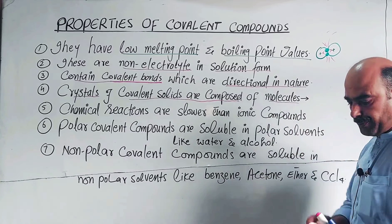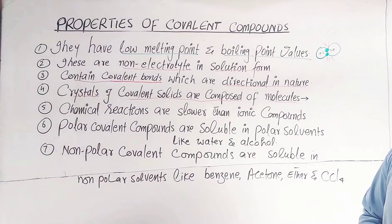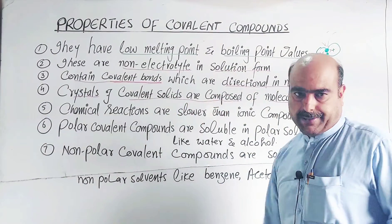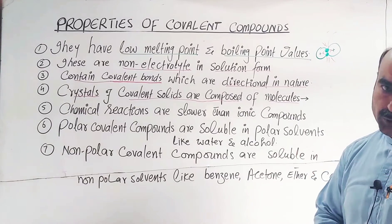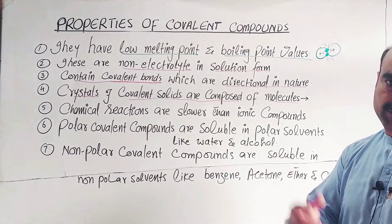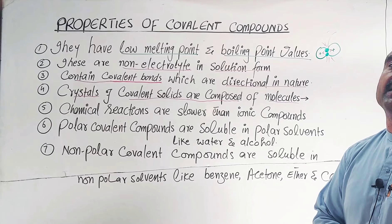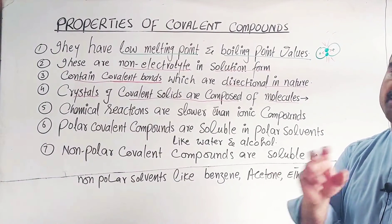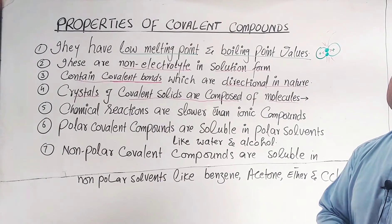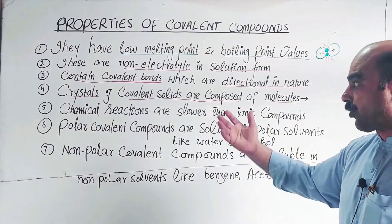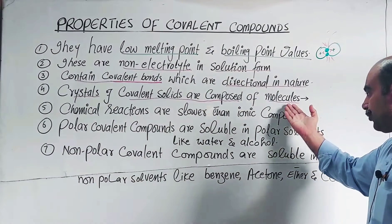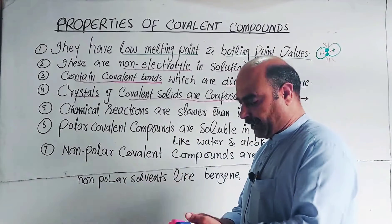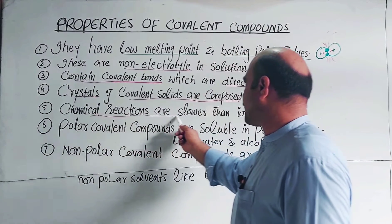Property number four: crystals or solids of covalent compounds are composed of molecules — they are molecular solids. For example, ice is composed of water molecules. Within the water molecules there are covalent bonds, so these are covalent solids composed of molecules.